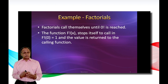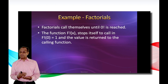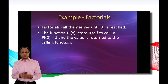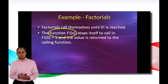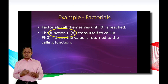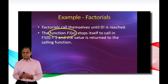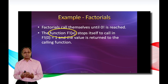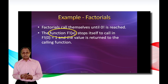We will clarify the recursion technique by the following example of factorials. Note that factorials call themselves until zero factorial is reached. Now let's make a function for the factorials. Because factorials call themselves until they reach zero factorial, the function stops at zero factorial and the value is returned to the function. Note that zero factorial is equal to one.